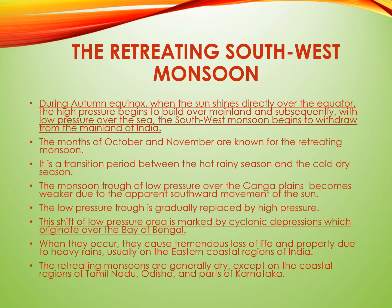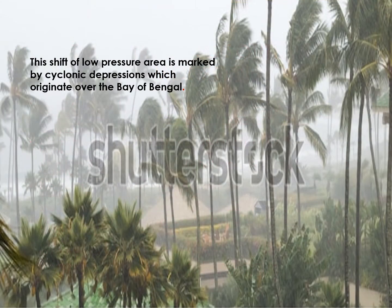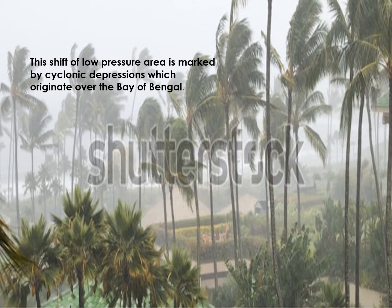Some of the cyclonic depressions manage to cross the eastern coast of the southern peninsula, resulting in heavy and widespread rains on the coast of Tamil Nadu and parts of Odisha. These cyclonic storms move from the northeast to the southwest. The retreating monsoons are generally dry except on the coastal areas of Tamil Nadu, Odisha, and parts of Karnataka. The bulk of the rainfall of the Coromandel coast is derived from depressions and cyclones.